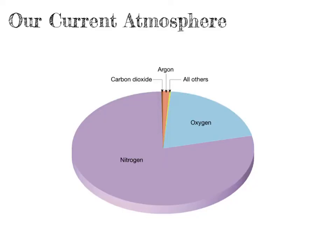The first thing you need to know for your GCSE exams is the composition of the current atmosphere — the proportions of different gases in the atmosphere today. The largest component of our current atmosphere is nitrogen, which is this part of the pie chart, and nitrogen takes up approximately 80% of our atmosphere. The next largest component is oxygen, which currently takes up approximately 20% of our atmosphere.